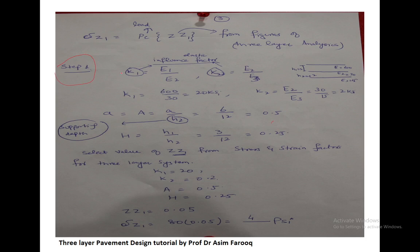The first step to resolve this tutorial problem is to determine the vertical stresses at interface layer one, so sigma Z1 equals PC times ZZ1. The load is already given, but the ZZ value will be determined from the three-layer graphical system — the stress and strain factor from the three-layer system. The very first step is to determine the value of K. K is basically the elastic influence factor. K1 equals E1 divided by E2, and K2 equals E2 divided by E3. Keep in mind: the denominator is always the supporting layer.